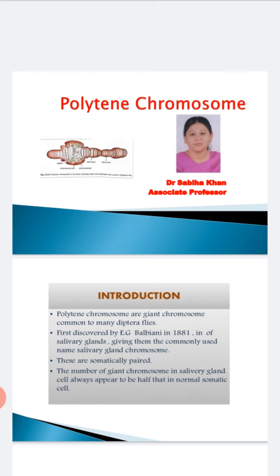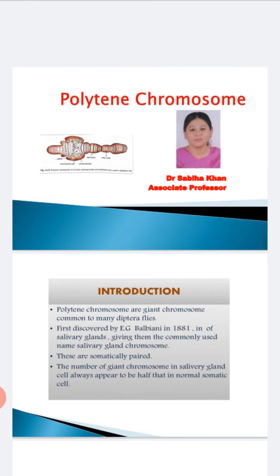Polytene chromosomes are called giant chromosomes and they are commonly found in dipteran flies, means two-winged flies. They begin as normal chromosomes but through repeated rounds of DNA replication without any cell division, therefore they are called endo-replication, they become large-banded chromosomes.